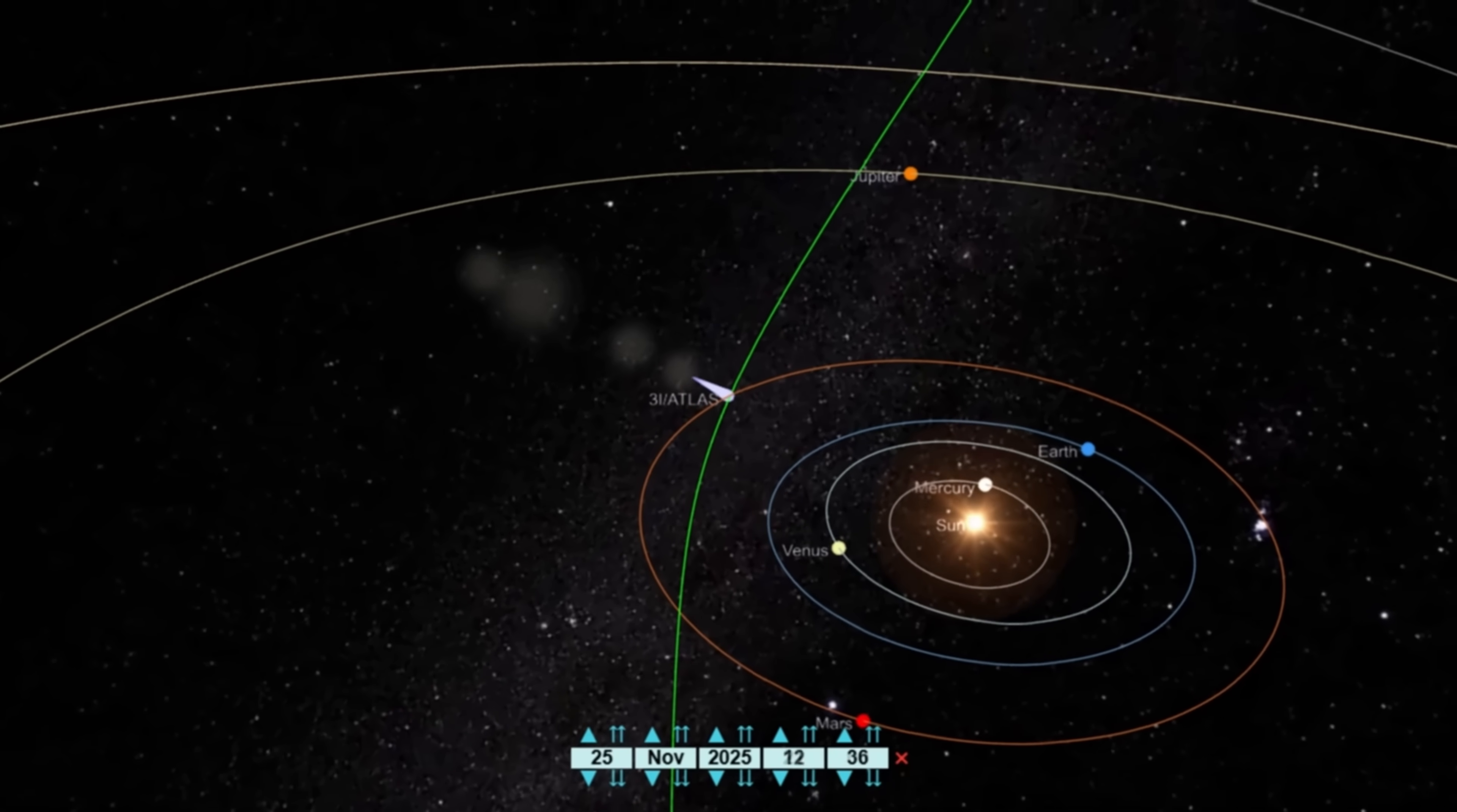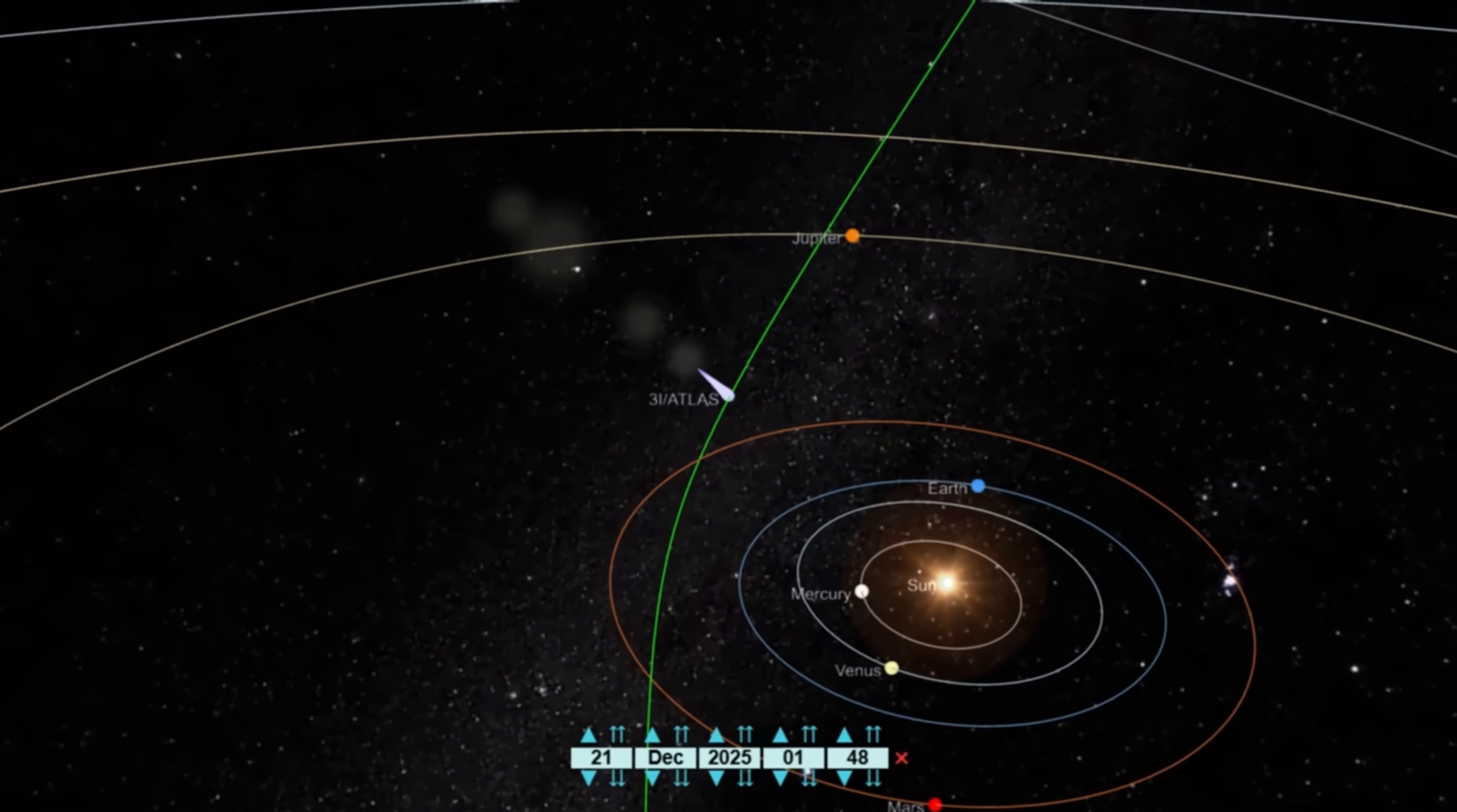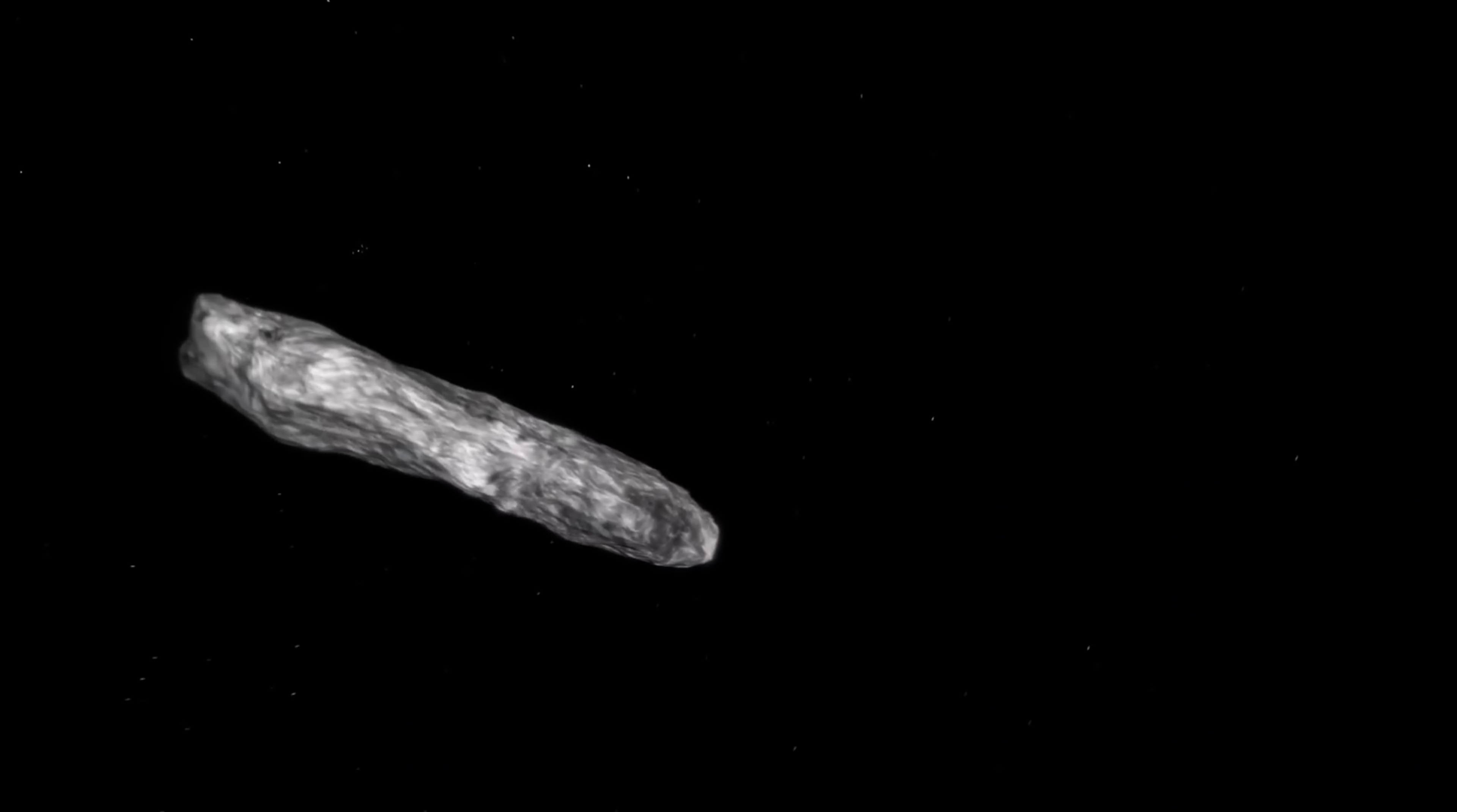This is not the first time interstellar visitors have forced us to confront such unsettling questions. In late 2017, astronomers detected a cigar-shaped object racing through the inner solar system. It was later named Oumuamua, Hawaiian for scout or messenger.